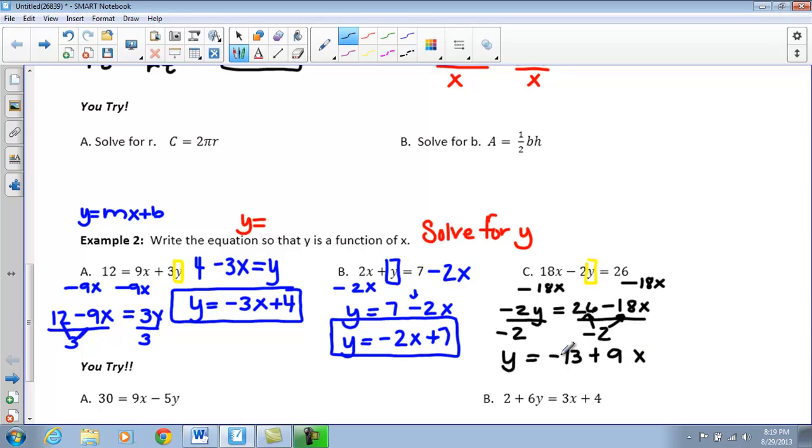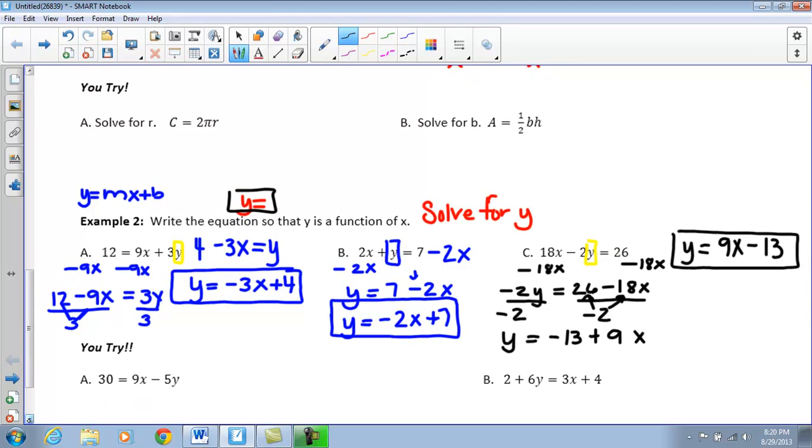And once again, I am just going to switch my order around so that my final answer is Y equals 9X minus 13. So, that we go back and look at each one of these examples. We solve for Y every time like they wanted us to. And then, we worked it back into that Y equals MX plus B. These two, you guys will try tomorrow in class.